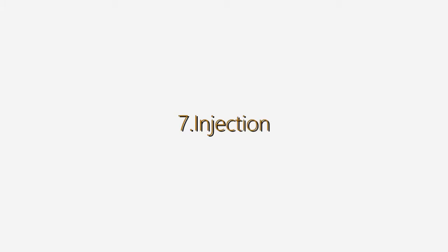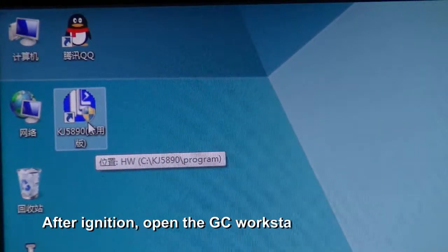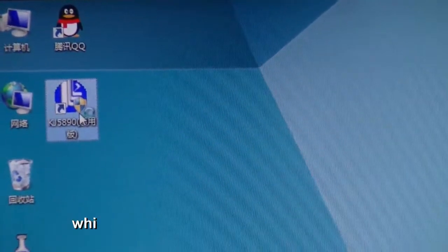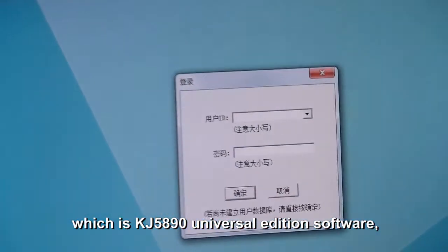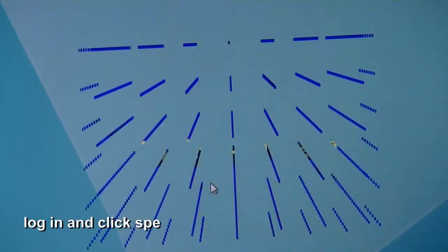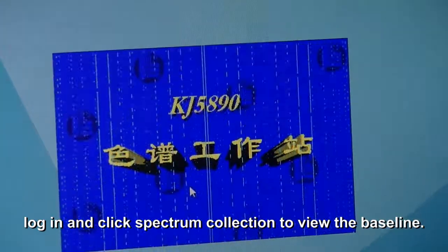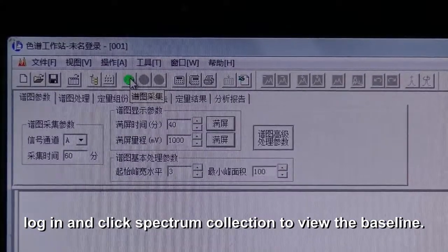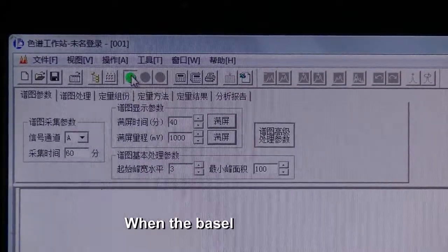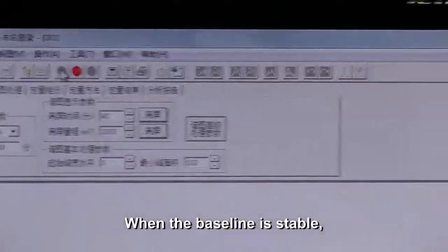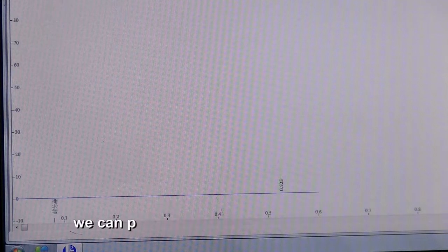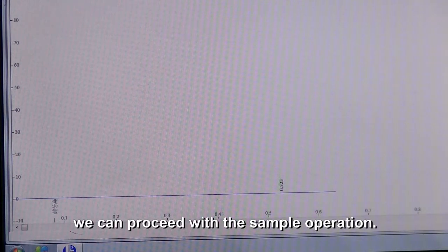Injection. After ignition, open the GC workstation, which is KJ5890 universal edition software. Log in and click spectrum collection to view the baseline. When the baseline is stable, we can proceed with the sample operation.